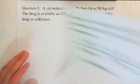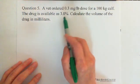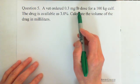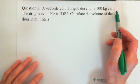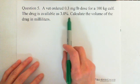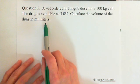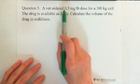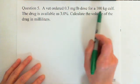The next question: a vet ordered 0.3 milligrams per pound dose for a 100-kilogram calf. The drug is available as 3.0%. Calculate the volume of the drug in milliliters.